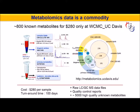Metabolomics data has become a commodity these days. Anyone can purchase these datasets from service centers in public and private sectors. For example, at WCMC at UC Davis, datasets having up to 800 known metabolites can be purchased for $208 per sample.